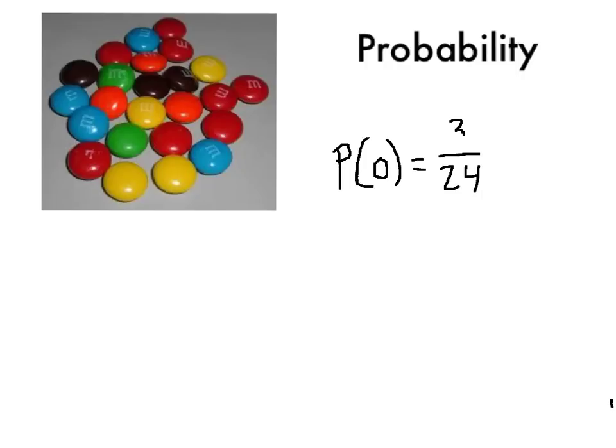So our probability of getting an orange would be 3 out of 24, or 3 24ths. We could simplify that by dividing both of them by 3, which would actually be 1 eighth. So our probability would be 1 eighth, or 3 24ths, either way.